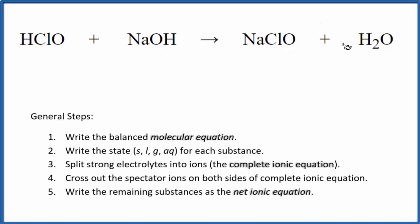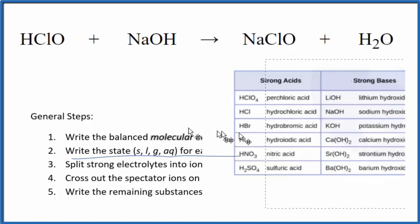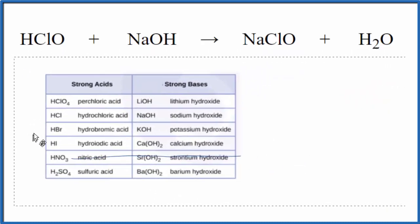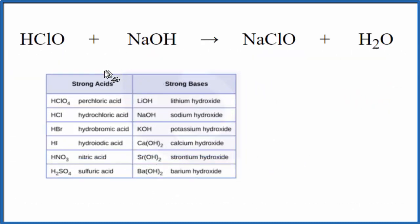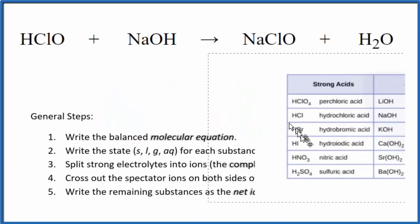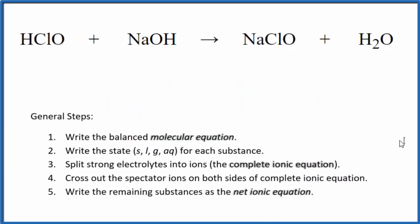Next we write the state for each substance. When we look at HClO, the H in front makes us think it's an acid. We look at a list of common strong acids and bases. For strong acids we see HClO4, but we don't see HClO, so this is going to be a weak acid.